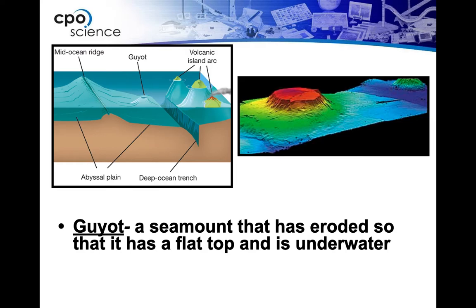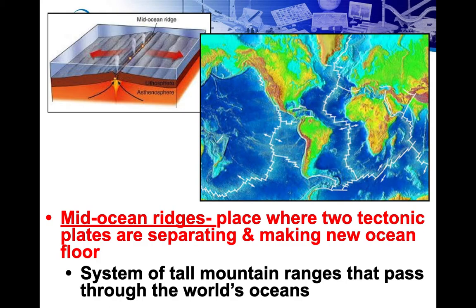Over time, seamounts can erode and form a guyot — a seamount that wave action has essentially chopped flat across the top, like a table in the middle of the ocean. On bathymetric maps, white lines indicate tectonic plate boundaries. You'll notice the arrows show plates moving away from each other in many locations — this is important for understanding the next features.